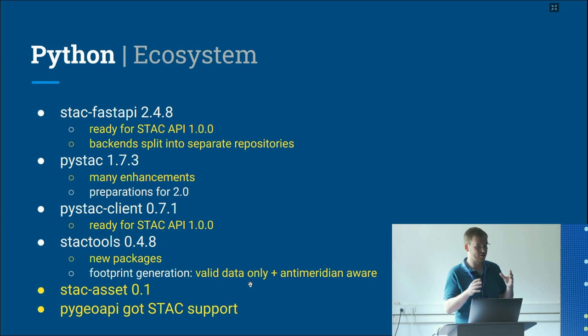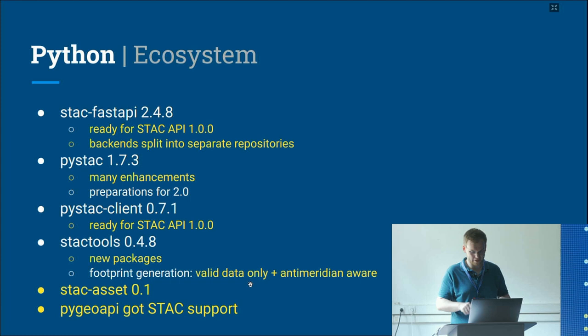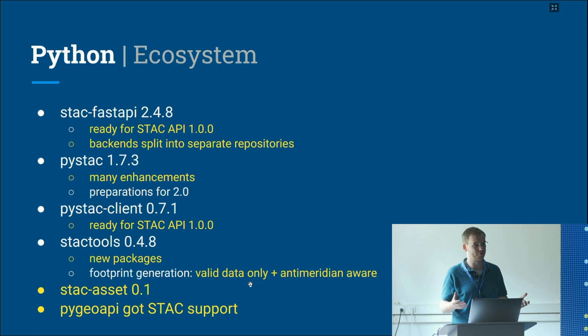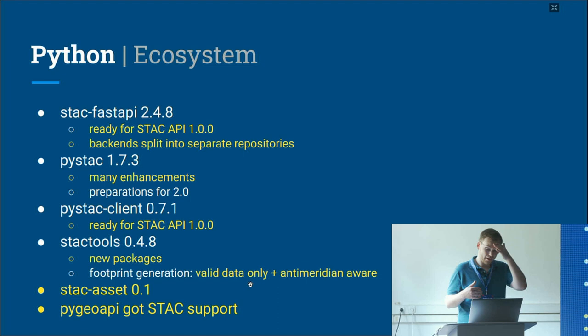STAC Tools got a lot of new packages for creating metadata from existing data and for conversion. Footprint generation has been made anti-meridian aware and now generates geometry only for the valid data in the file, not just the full file extent. STAC Assets has been released as a tool specifically for downloading the data available as assets, distinct from the clients that were mostly for consuming the API and retrieving metadata. PyGeoAPI also gained STAC support.